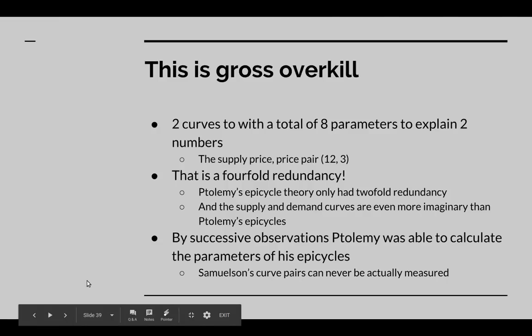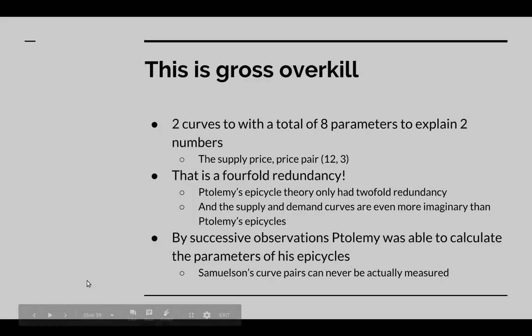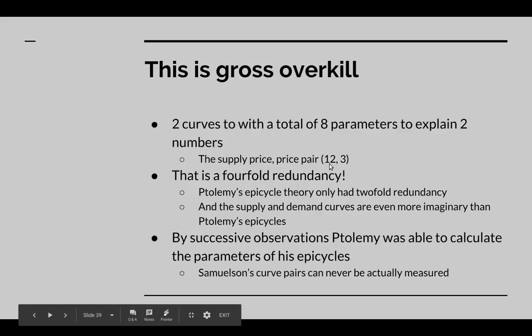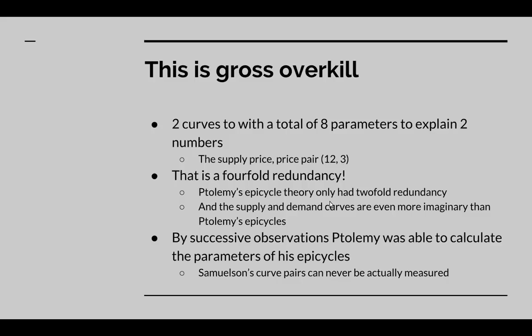Now, this is gross overkill. He's got two curves with a total of eight parameters to explain two numbers. All he's actually got as an observation is the supply price and selling price pair. Twelve units supplied at a price of three. So, it's a four-fold redundancy.